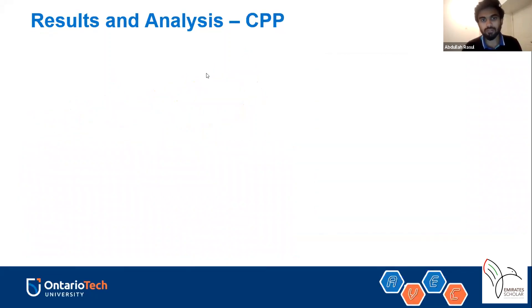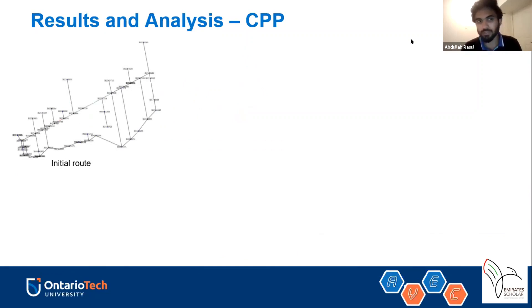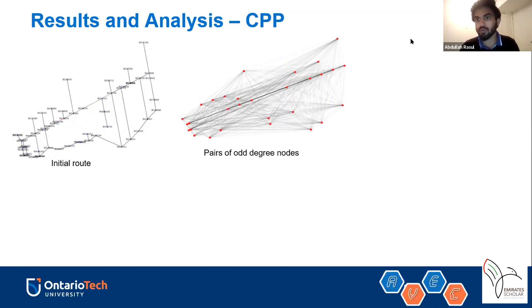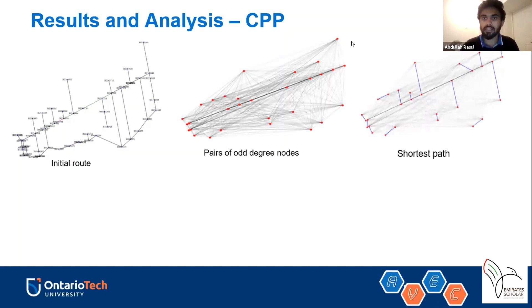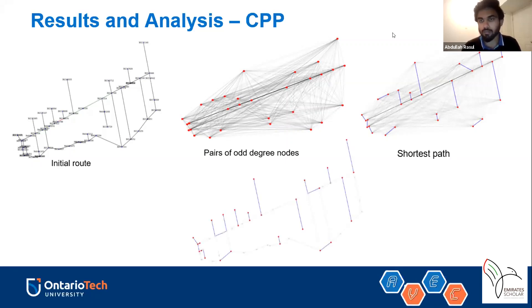For the results, starting with the Chinese Postman Problem: given an initial route for one truck — where labels indicate node IDs — the CPP checks each node and identifies which are odd-degree, meaning non-Eulerian. It then finds the shortest path between every odd-degree node pair, determines where to add edges to complete the graph without unnecessary extra distance, and adds those edges to the initial route to produce the full completed graph.